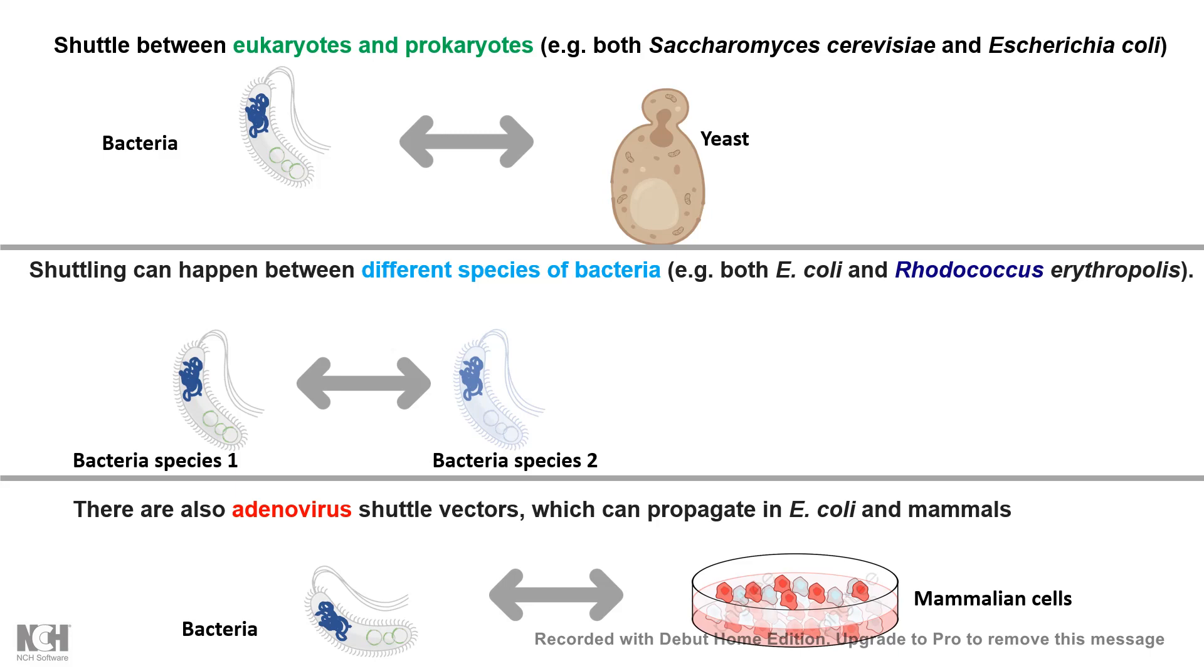So shuttle vectors are used to generally segregate your plasmid in two different species. Now we'll look at some features of shuttle vectors and how they are different from other vectors.